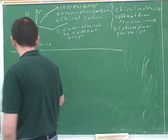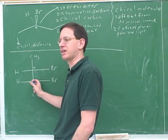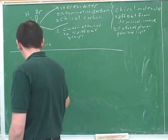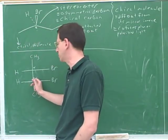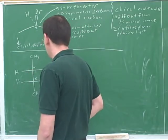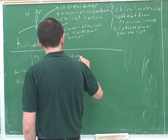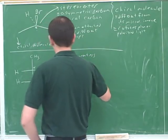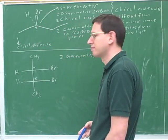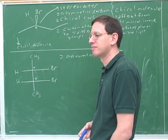That's right. This is a stereocenter because it's attached to four different things. A hydrogen, a methyl group, a bromine, and a complicated thing down here. And this is also a stereocenter because it's also attached to four different groups. A hydrogen, a methyl, a bromine, and a complicated group up here. So there's two stereocenters. We can also say it has two chiral carbons.